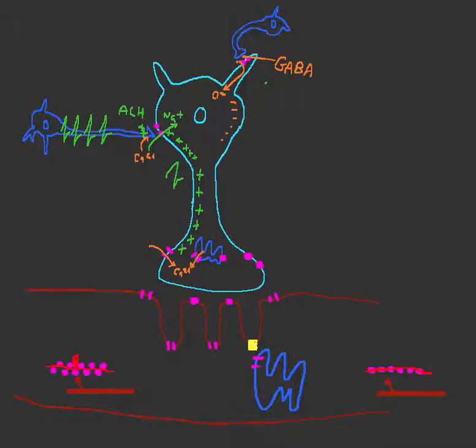And then, this will cause the fusion of vesicles with the presynaptic membrane, and we'll be releasing... So, we'll draw that, and then it'll release a neurotransmitter, like acetylcholine, into the synaptic cleft.